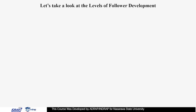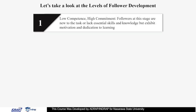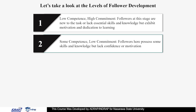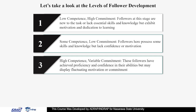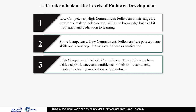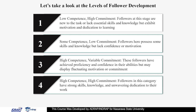Let's take a look at the levels of follower development. Low competence, high commitment: followers at this stage are new to the task or lack essential skills and knowledge but exhibit motivation and dedication to learning. Some competence, low commitment: followers here possess some skills and knowledge but lack confidence or motivation. High competence, variable commitment: these followers have achieved proficiency and confidence in their abilities but may display fluctuating motivation or commitment. High competence, high commitment: followers in this category have strong skills, knowledge, and unwavering dedication to their work.